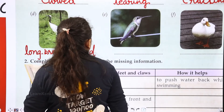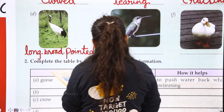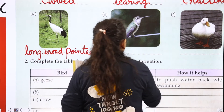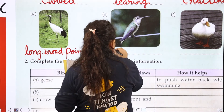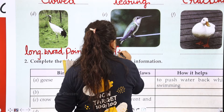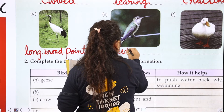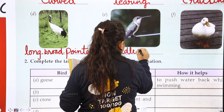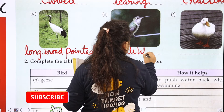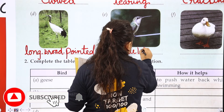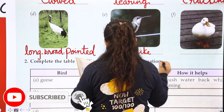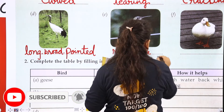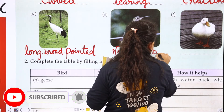Next is a needle-like beak — shaped just like a needle. Write: needle-like beak.